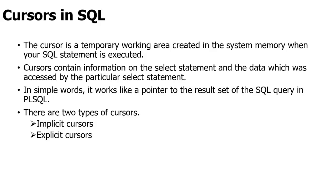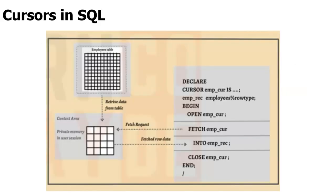There are two types of cursor: implicit cursor and explicit cursor. This is the representation — this is the original table. From this original table, I have to select some set of rows and columns to work on. Instead of accessing the entire table, I am selecting some particular data where I want to make some changes or operations, and I am putting it in a place called the context area, which is your temporary space.